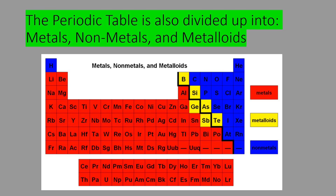Another pattern on the periodic table — another example of periodicity — is that the periodic table is also divided up into metals, nonmetals, and metalloids. Most of the periodic table is metals. Nonmetals include hydrogen over here — it's still a nonmetal even though it's grouped near the metals. Along the stair-step black line, you have the metalloids: boron, silicon, germanium, arsenic, antimony, and tellurium. Metalloids have characteristics of both metals and nonmetals.